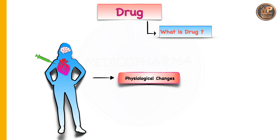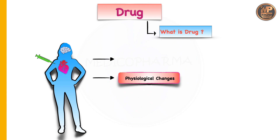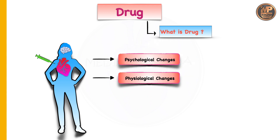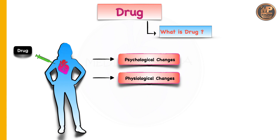Sometimes this substance may reach the nervous system and cause various stimulation or inhibition. Due to that, there will be behavioral changes — the person may feel anxiety or excitation. So we can say that due to this substance there are psychological changes. To summarize: when a substance is given or administered to our body and it causes physiological changes or psychological changes, then we call that substance a drug.